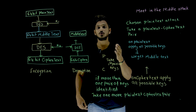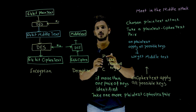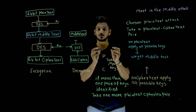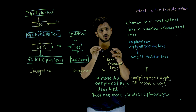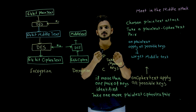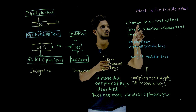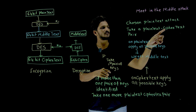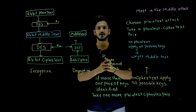In a chosen plaintext attack, if you have access to the source, you can take your own chosen plaintext and get the corresponding ciphertext. You collect those plaintext-ciphertext pairs and use them to attack. So take one pair of chosen plaintext and ciphertext.